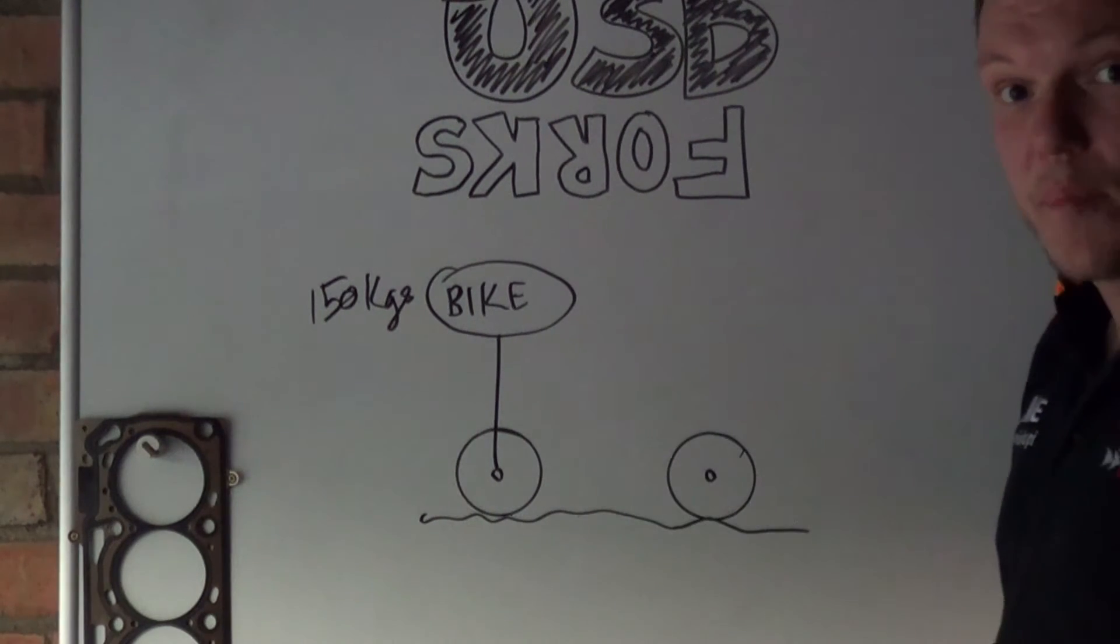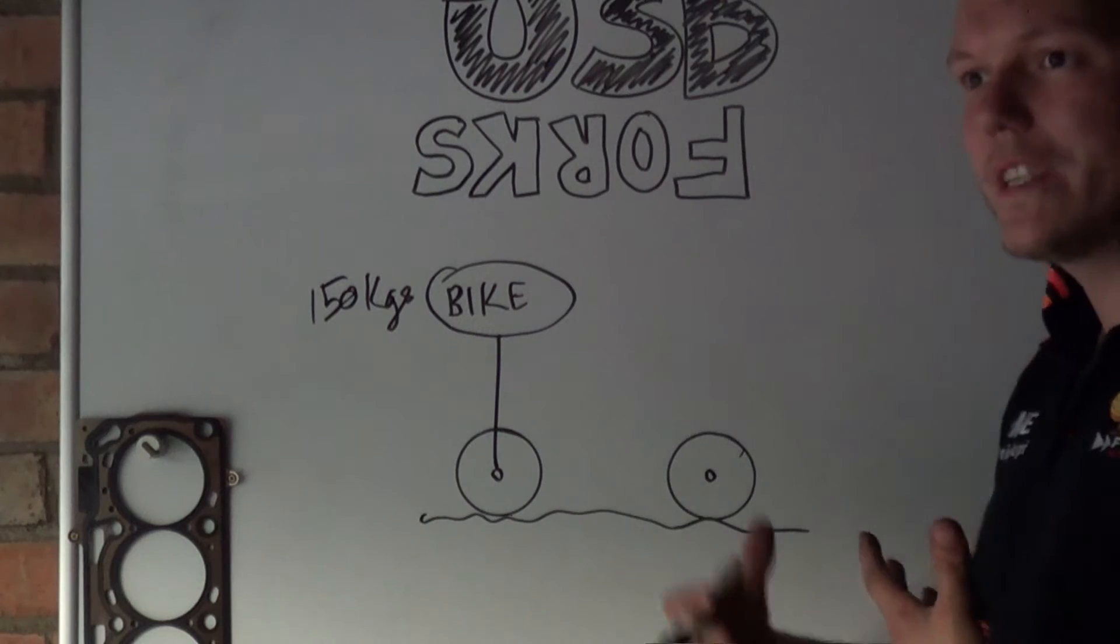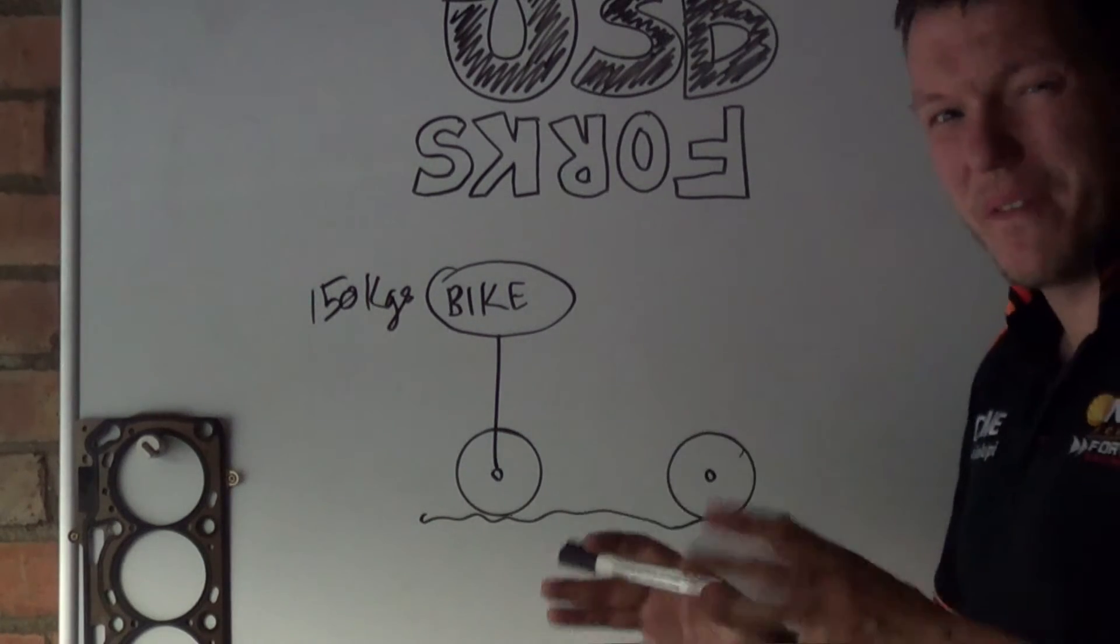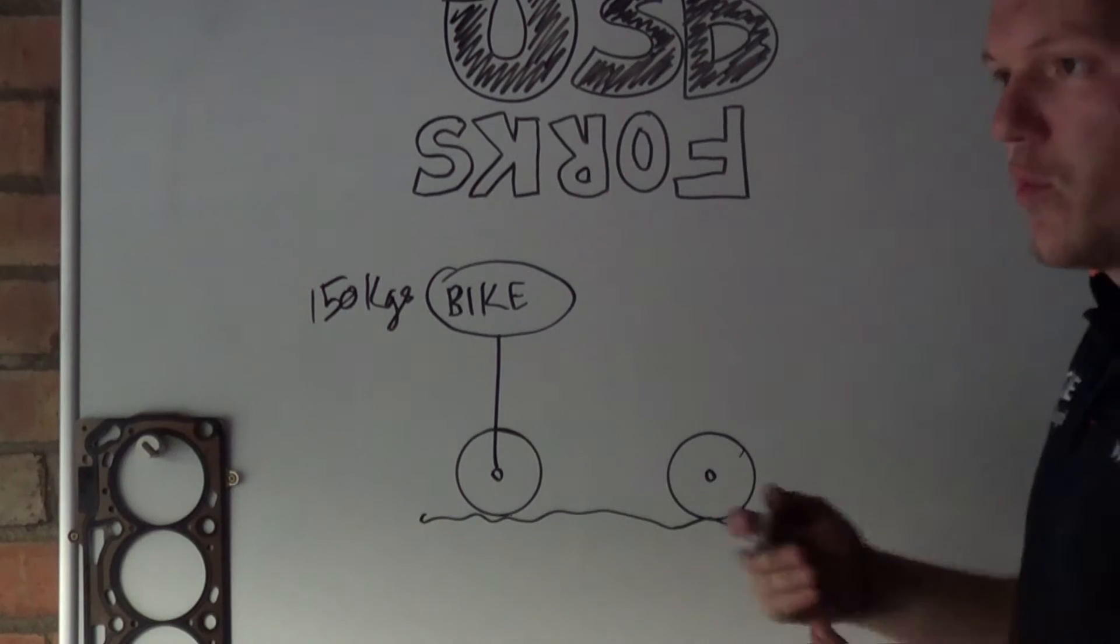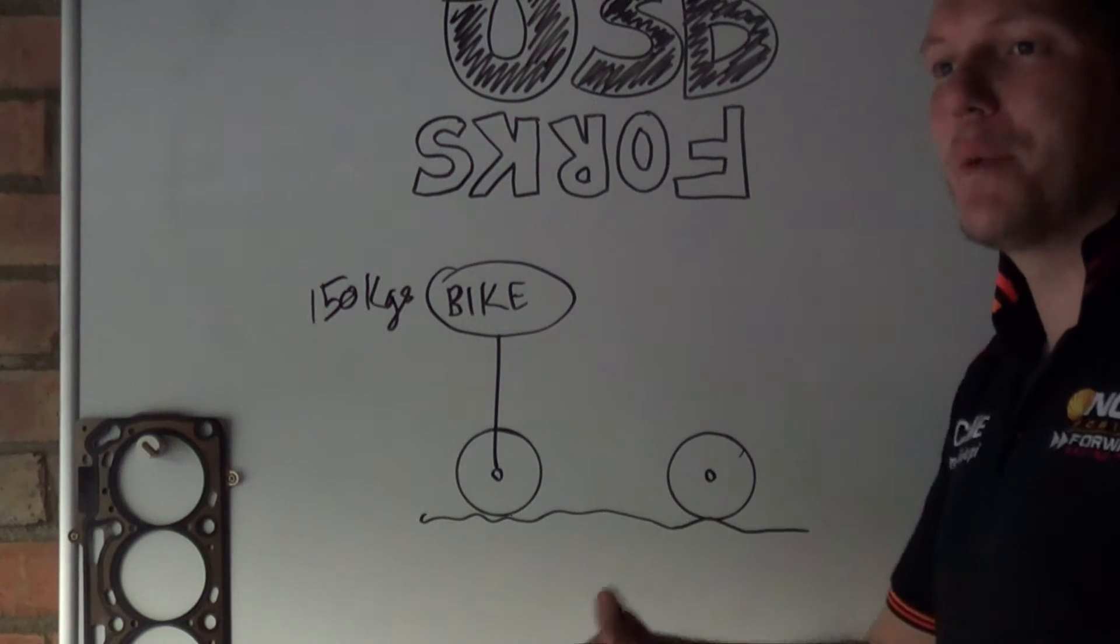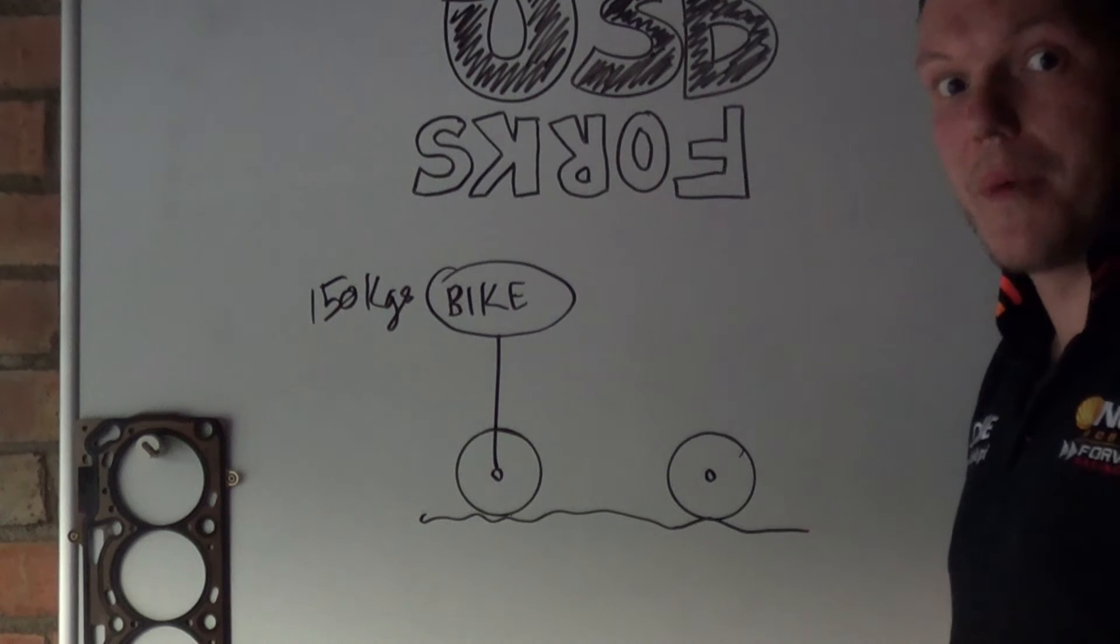On our second example, it begs the question what is sprung and what is unsprung because there's a bit where it gets a bit fuzzy. So your wheel, your tire, your brake caliper, your disc, they're all unsprung mass.